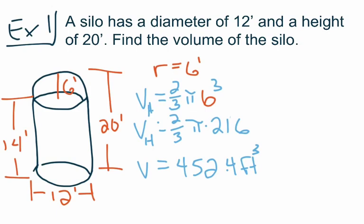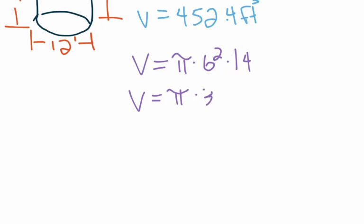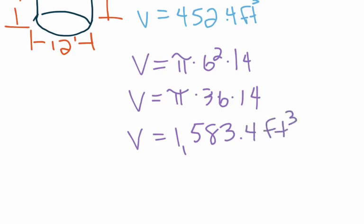Now we still need to find the volume of the cylinder. The information for the cylinder is height of 14 and radius of 6. The formula is V equals pi r squared h, so we have pi times 6 squared times 14. We're not doing exact values, so we just multiply them all together. We get V equal to 1,583.4 cubic feet.